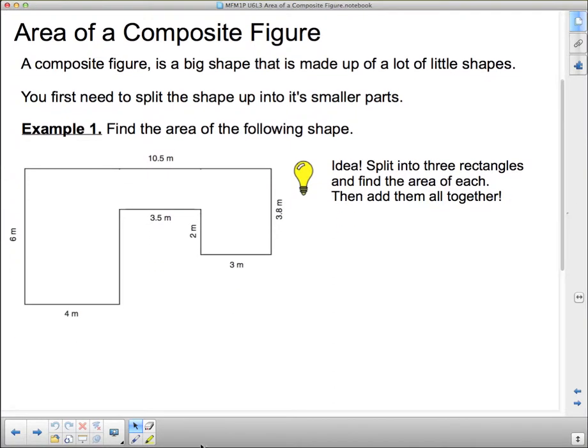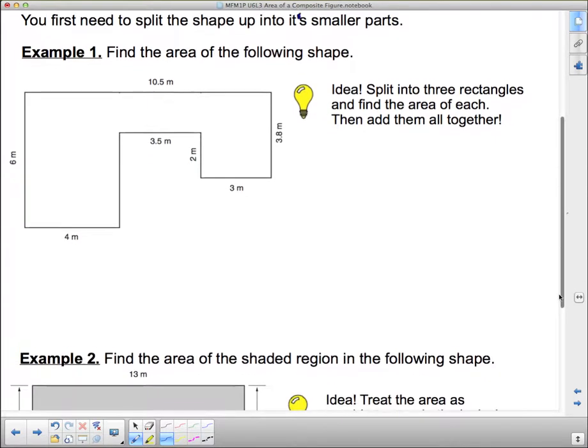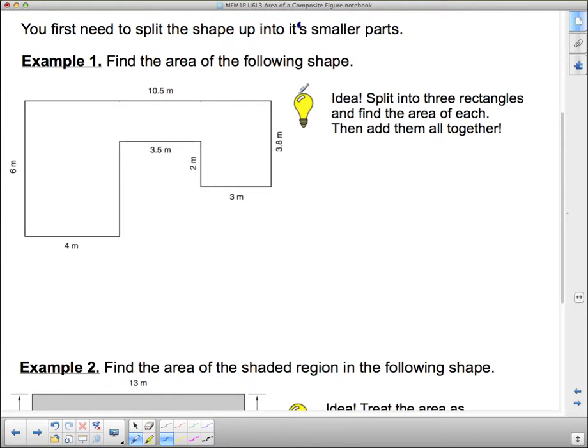And I'm just going to correct a grammar error here. That apostrophe should not be there. Okay, example number one. Find the area of the following shape. So here's our idea. I've got a little light bulb there going off above your head. Idea: split into three rectangles and find the area of each, then add them together.